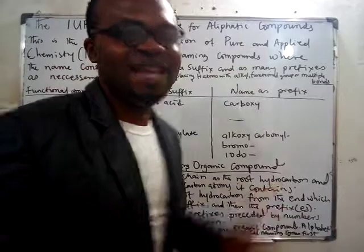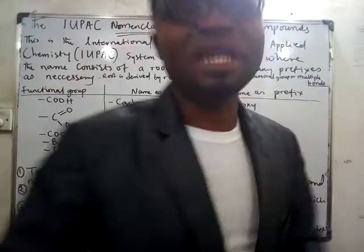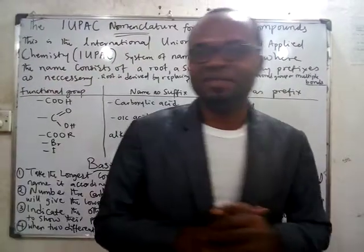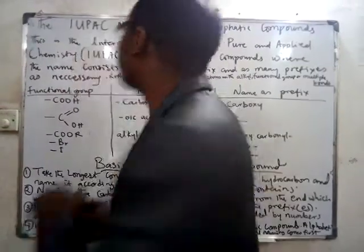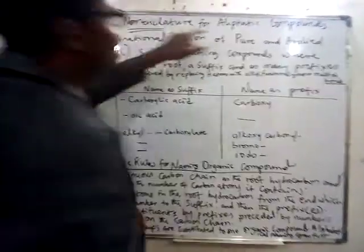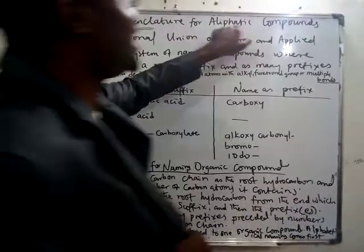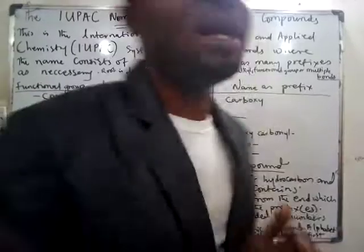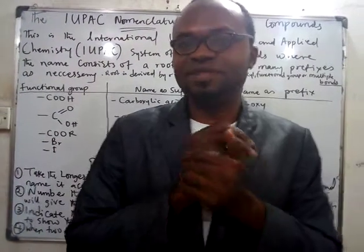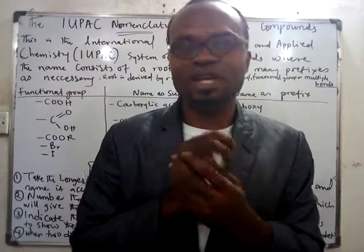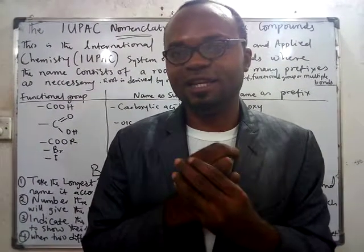That's the way they name things — they name chemical compounds. You understand? You use IUPAC nomenclature for aliphatic compounds in chemistry, in organic chemistry. It's that clear.